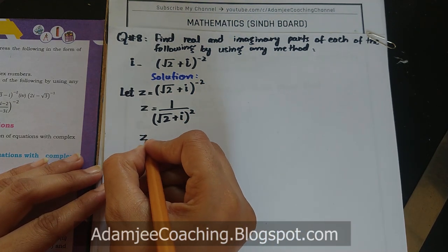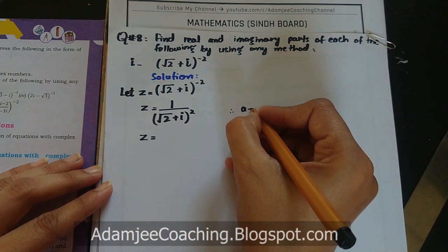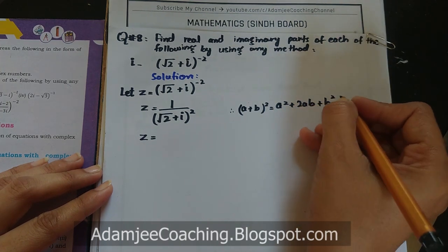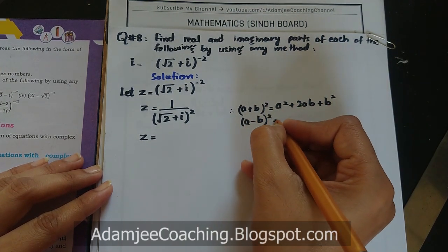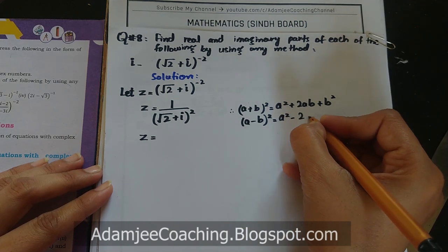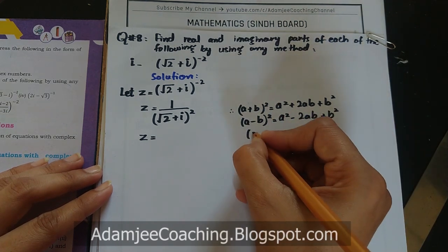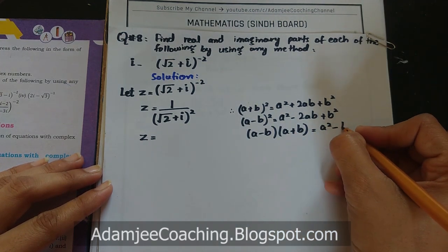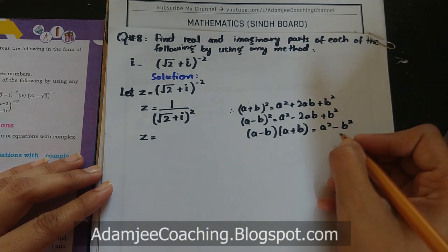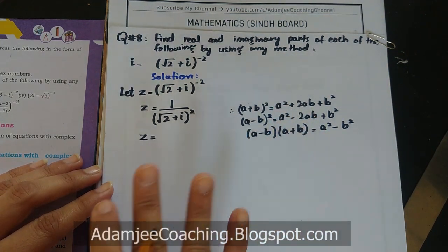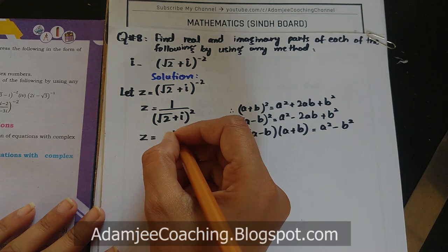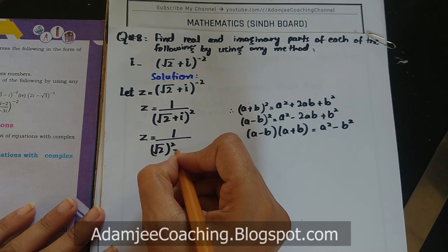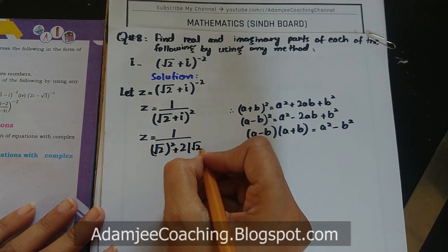آپ جانتے ہیں کہ (a+b)² = a² + 2ab + b². یہ تین فارمولیاں یاد کر لینی ہیں کیونکہ یہ کسی بھی exercise میں کہیں بھی use ہو سکتے ہیں۔ تو یہاں پر apply کر دیتے ہیں: 1 upon (√2 + iota)² — یہ a ہے اور یہ b ہے۔